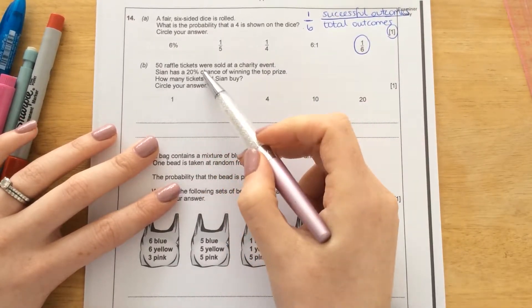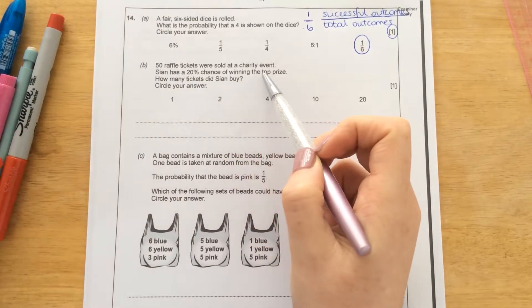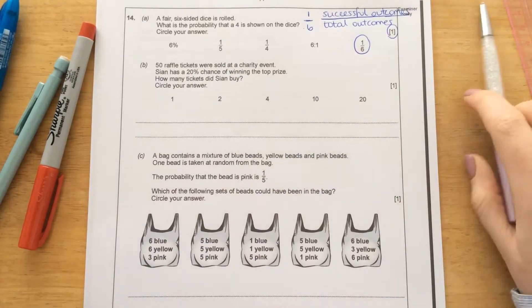Part B. 50 raffle tickets were sold at a charity event. Sian has 20% chance of winning the top prize. How many tickets did Sian buy?